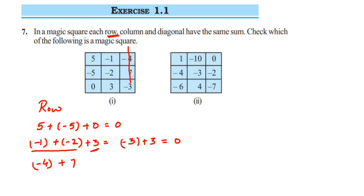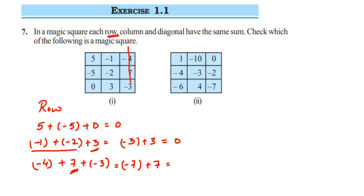The last row is (−4) + 7 + (−3). First I add the numbers with the same sign: −4 and −3 both negative, so 4 + 3 = 7, giving −7. Then −7 + 7 cancels out, giving 0. So all three rows of the first square give a sum of 0. Now we move on to the columns.